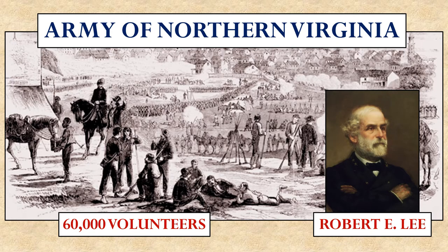Meanwhile, it was opposed by the Army of Northern Virginia, led by Robert E. Lee. Robert E. Lee had half the troops of the Army of the Potomac at his disposal, but he was aggressive. He was brilliant, and his troops loved him and would do anything for him. This gave him a great advantage in the battles that took place in that eastern theater of war around the capitals.